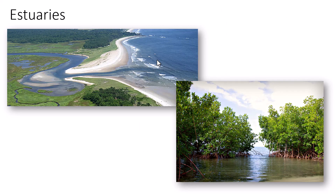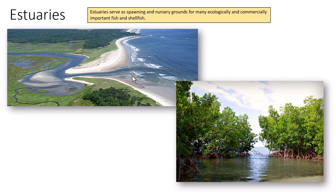Estuaries are areas where freshwater dumps into the ocean, mixing fresh and salt water. They serve as spawning and nursery grounds for many ecologically and commercially important fish and shellfish. Their decreased salinity leads to increased productivity and biodiversity. Sharks and young fish come in for protection, hiding in habitats like mangrove swamps. That's it for this video — leave any questions in the comments or bring them to class. Like the video. See ya!